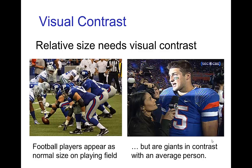In order for this comparison of relative size to be successful, you need a visual contrast. For example, if you watch a football game, you might not be that impressed about the size of the players when you're just watching on TV and you see the players on the field. The reason they don't seem large is because they are all large, and so you don't have visual contrast. But when one of those players is standing in a crowd of ordinary-sized people, then you have visual contrast and you notice their large size.